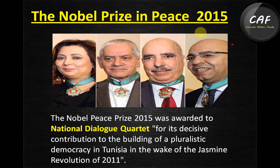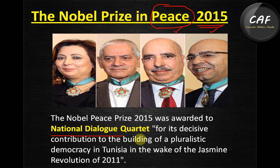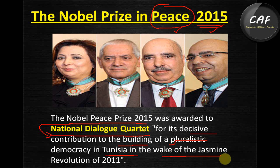Now the very important Nobel Peace Prize 2015. It was given to the Tunisian National Dialogue Quartet — a group of four members — for its decisive contribution to the building of a pluralistic democracy in Tunisia in the wake of the Jasmine Revolution of 2011. Remember the group name: National Dialogue Quartet.